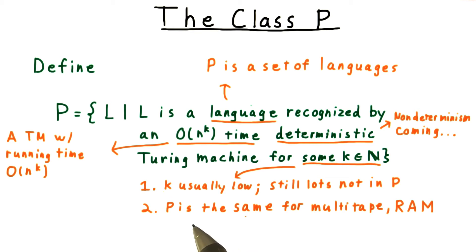Second, the definition is robust to changes in the model. That is to say, P is the same for single tape, multitape machines, random access machines, and so forth. In fact, we pointed out that the running times for each of those models are polynomially related when we introduced them.